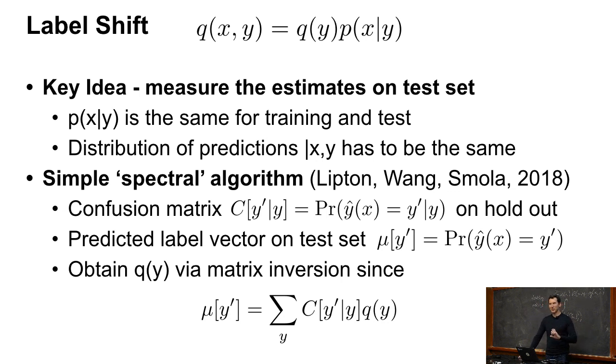You go and look at the error confusion matrix. And you look at basically what the predictions on the training set are. You look at the corresponding error confusion, the corresponding label predictions on the test set. These are not the true labels, but they are the predictions.